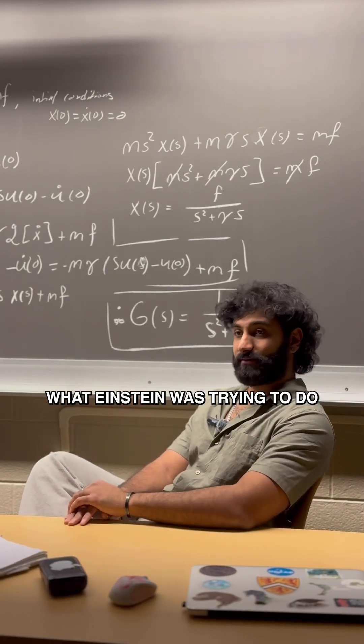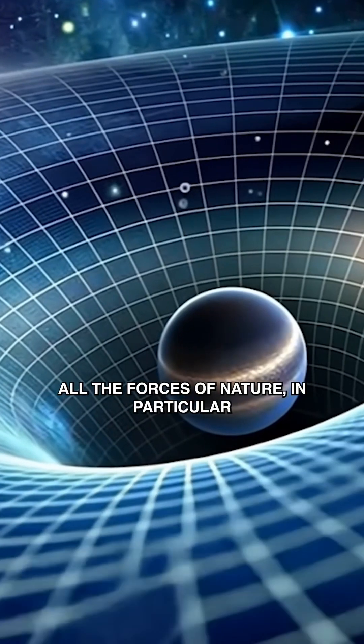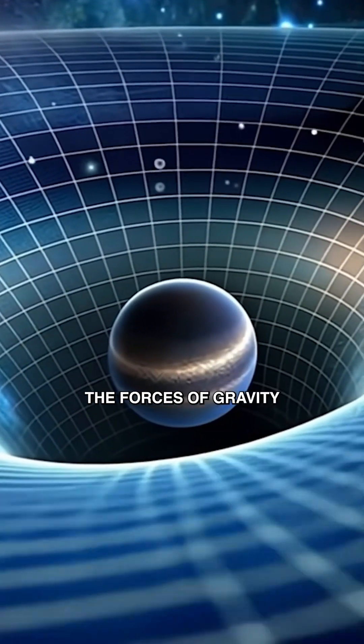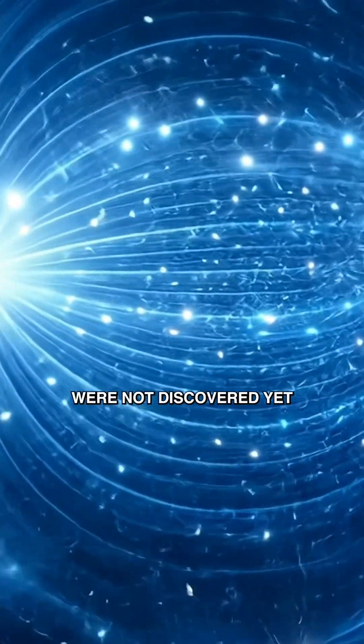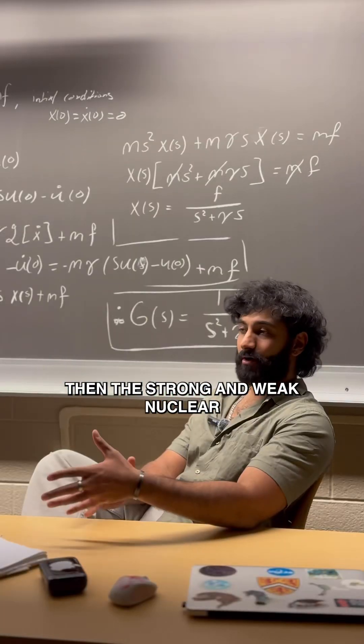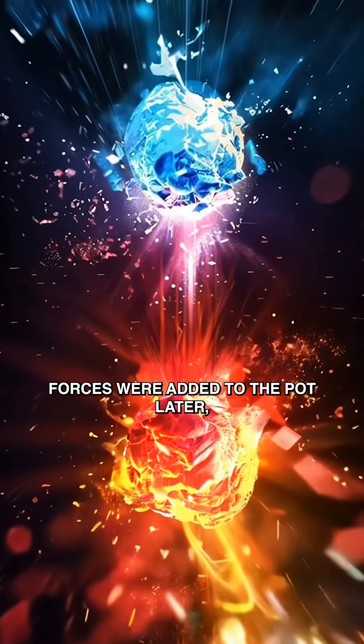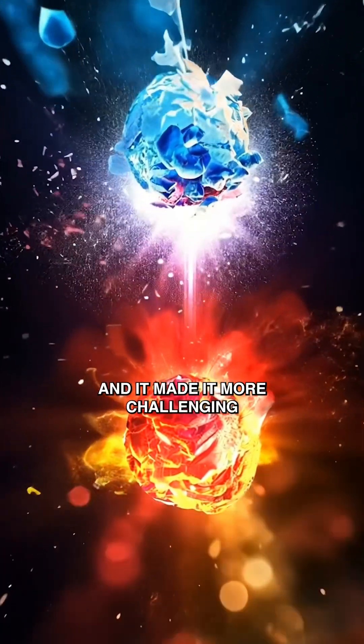What Einstein was trying to do is to unify all the forces of nature, in particular the forces of gravity and electromagnetism, as the other forces were not discovered yet. Then the strong and weak nuclear forces were added to the pot later, and it made it more challenging.